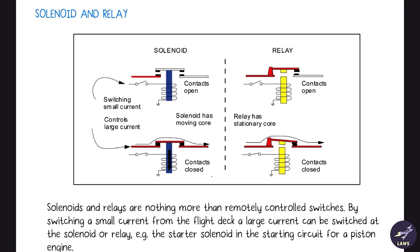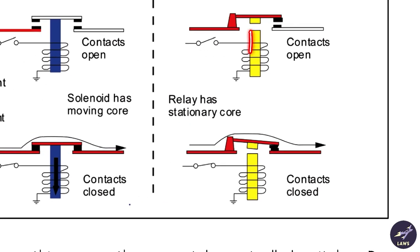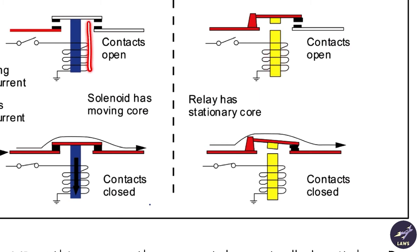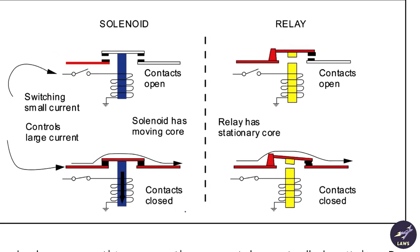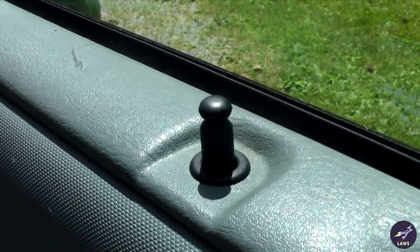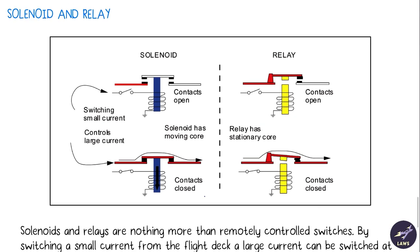The main difference between a relay and a solenoid is that the relay has a stationary core, whereas in a solenoid the core actually moves. When the switch closes, the core moves and the contacts close. An example of a solenoid would be a car's central locking system, and it is also used in an aircraft's starter motor.